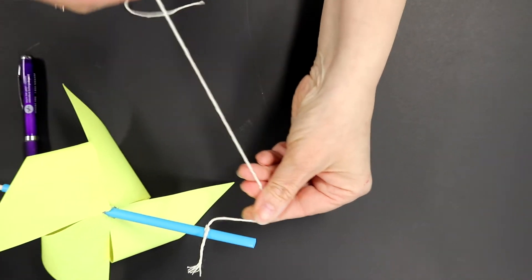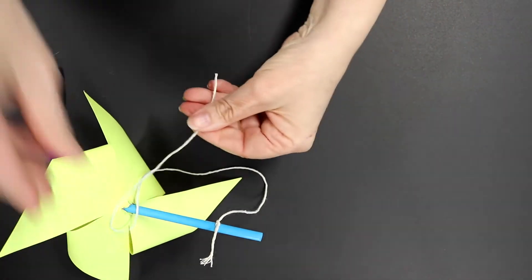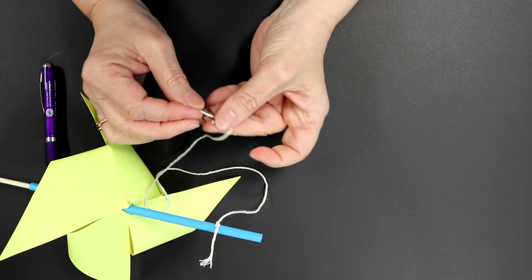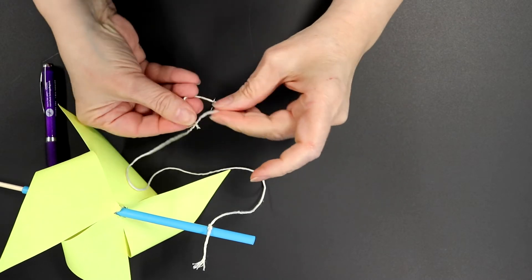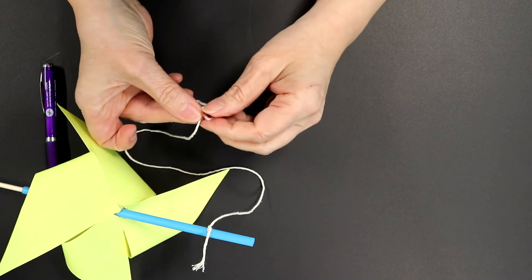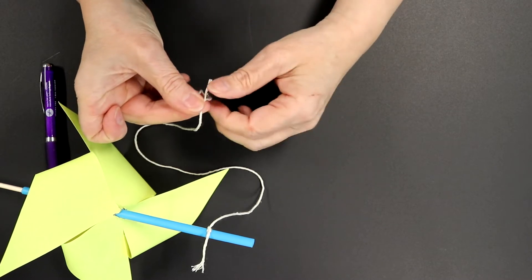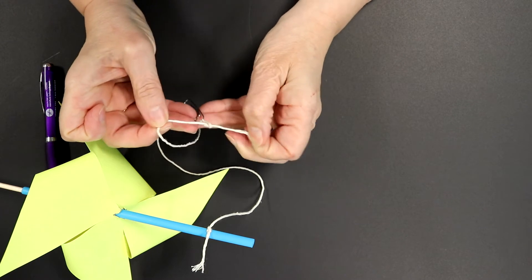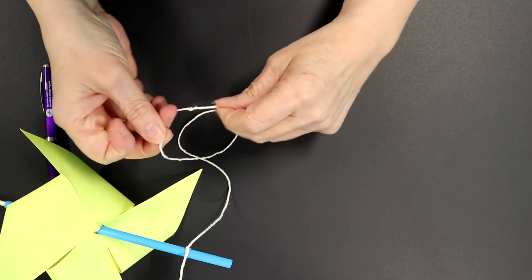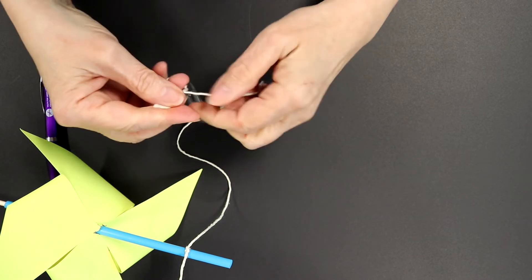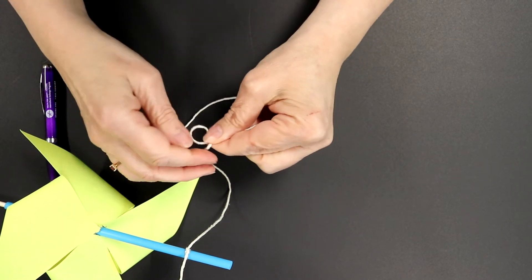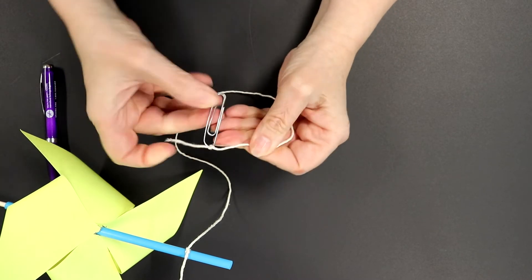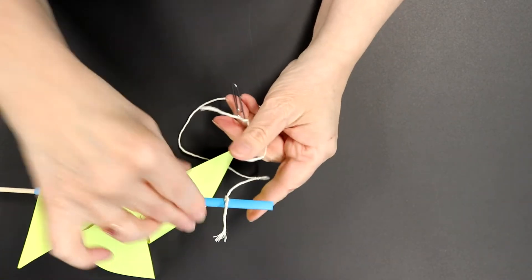Then the other end of your string you're going to tie around the paper clip. So I'll push it through. Again, make a circle. And I have plenty of string so I can do a big circle. So you might need help from your parent to tie a knot. So you make another circle and push the end through. And there you have a knot at the end of the paper clip and at the end of the straw.